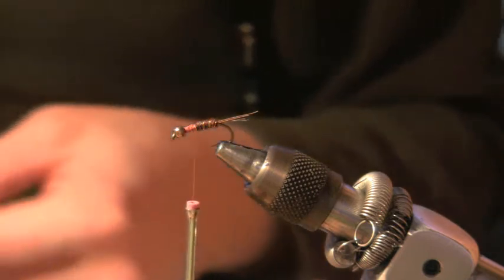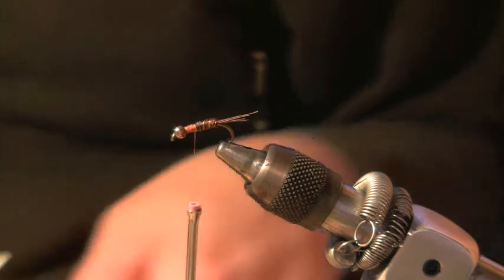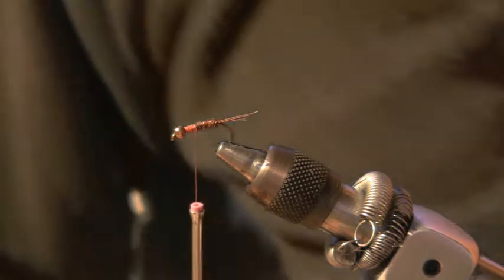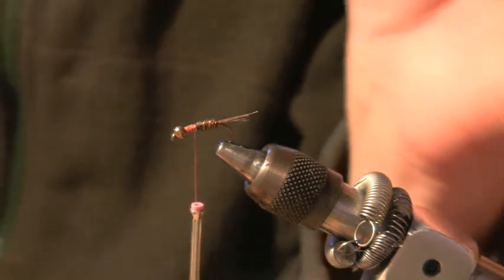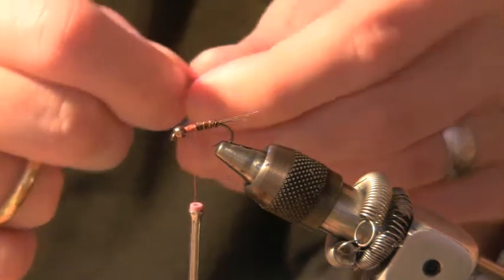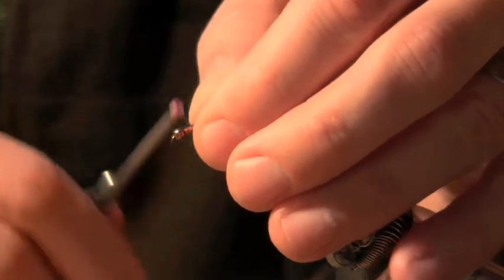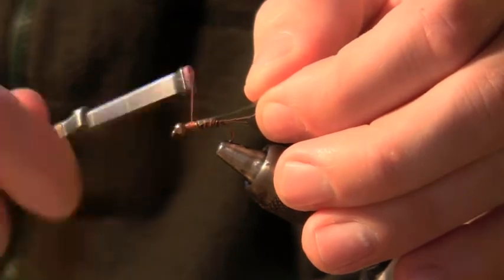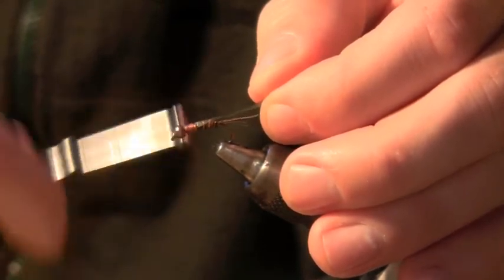Because sometimes flash works real good and sometimes it doesn't. Sometimes you need to go more natural. So I kind of like to, I'm just going to put some olive scud back in there to do that. Now I'm just going to wrap it in there and then wrap it back to where the pheasant stops.